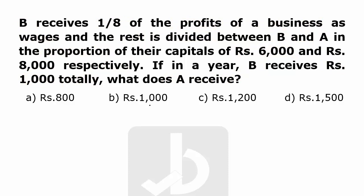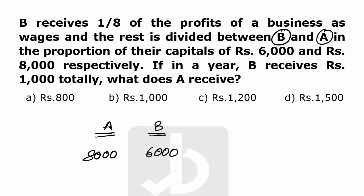As you all know, money is divided according to their capitals. A invested rupees 8000 and B invested rupees 6000. So the ratio of the profit is 4 is to 3.